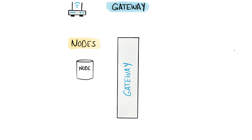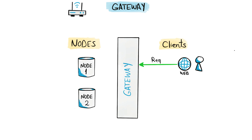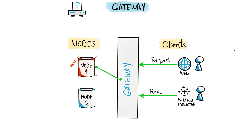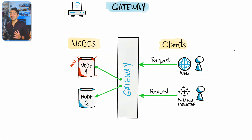In a multi-node environment with two nodes, when the gateway receives the first request it forwards it to node one since both nodes are free. But if the gateway gets a second request, it says node one is busy and processes the request on node two since it's free. So the gateway acts like a distributor that knows everything.